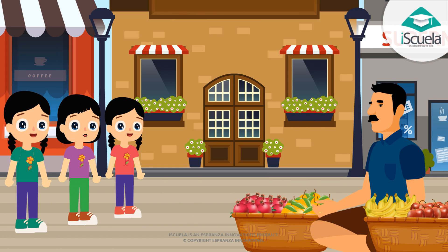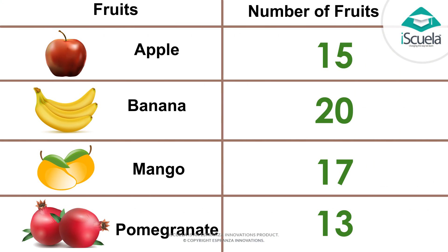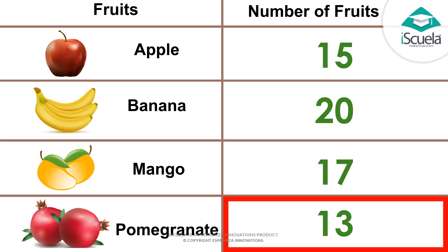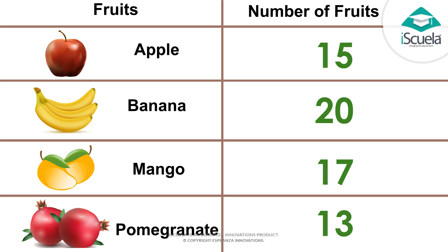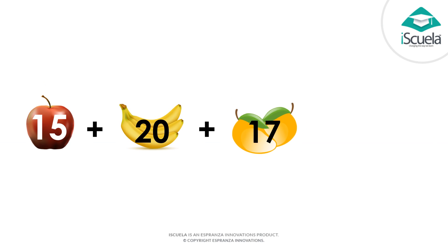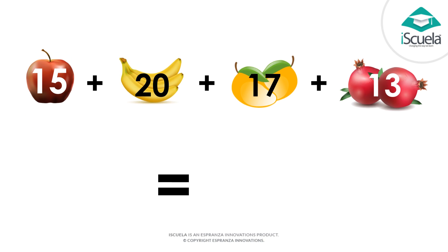Hey Gwinder, I have counted all the fruits and Unmoor has noted them in a table. Now I will ask you some questions. Look at the table carefully and answer. How many bananas are there in the basket? 20 bananas. How many pomegranates are there in the basket? 13 pomegranates. Which fruit is more in number? Bananas. Quantity of which fruit is the least? Pomegranates. What is the total number of fruits in the basket? There are 15 apples, 20 bananas, 17 mangoes, 13 pomegranates, so it is equal to 65.